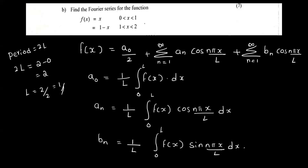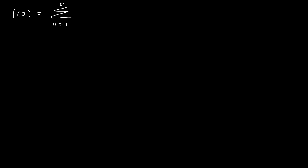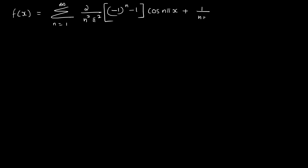Now we have f of x equal to a₀ by 2, where a₀ is 0. The full Fourier series is: summation n equal to 1 to infinity of 2 by n²π² times ((−1)ⁿ minus 1) times cos(nπx), plus bₙ value 1 by nπ times (1 minus (−1)ⁿ) times sin(nπx).